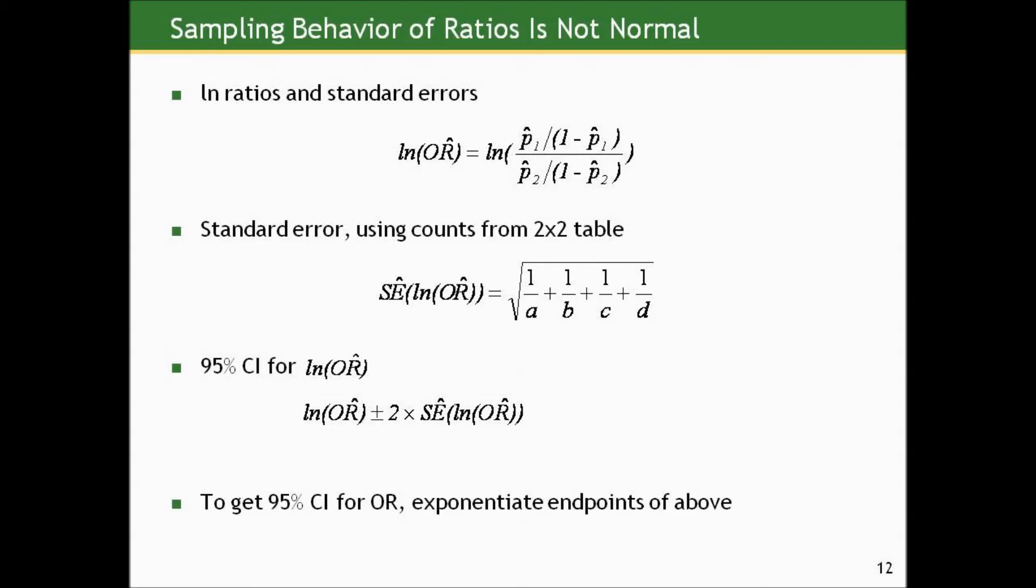Well it turns out this is kind of a cool formula. The standard error using the counts from a 2x2 table of the log of the estimated odds ratio, the estimated standard error is the square root of 1 over A plus 1 over B plus 1 over C plus 1 over D. So 1 over each of the counts in the 2x2 table added together.